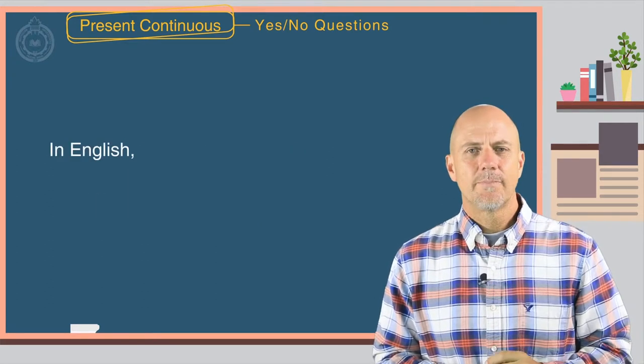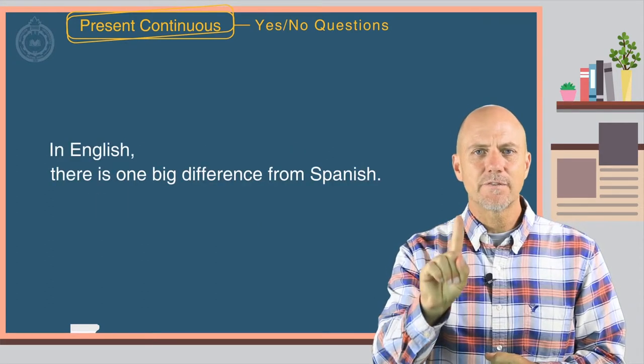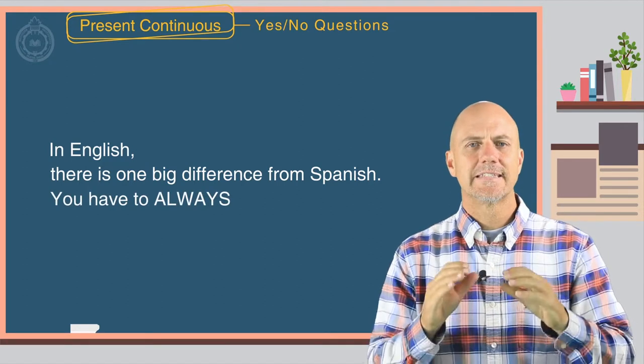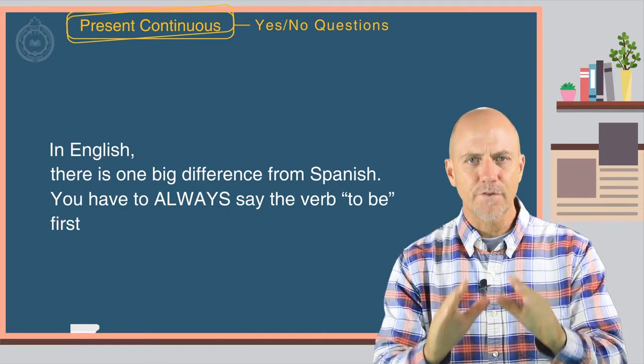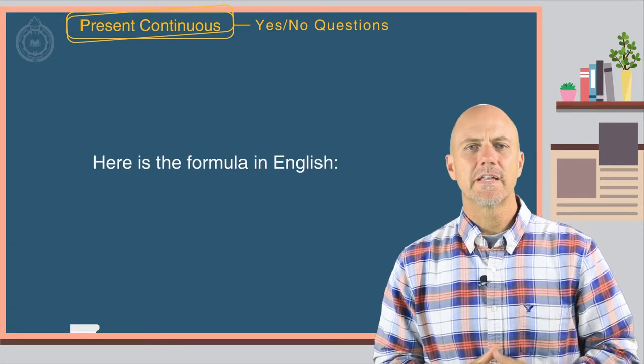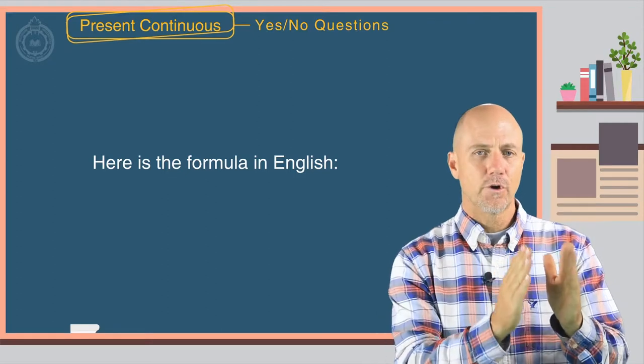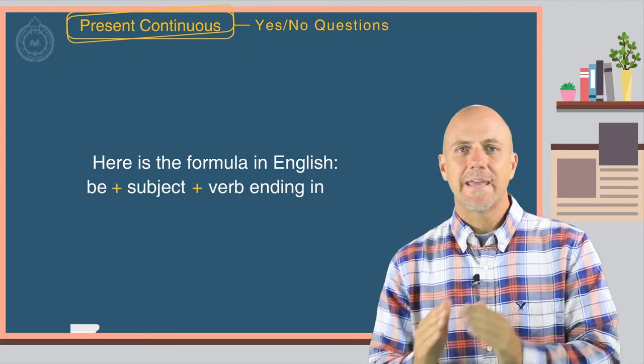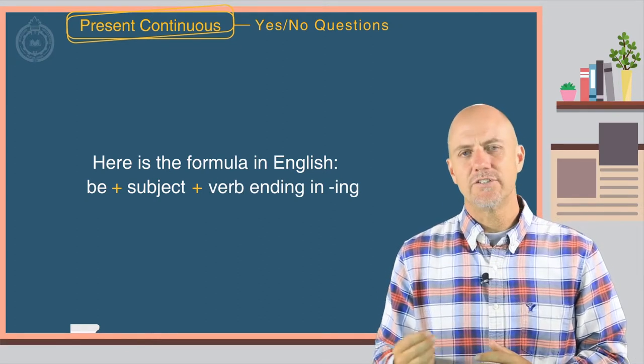In English, there is one big difference from Spanish. You have to always say the verb to be first to ask a question. Here is the formula in English: the verb be plus the subject plus the verb ending in ing.